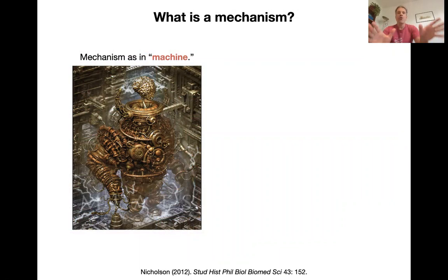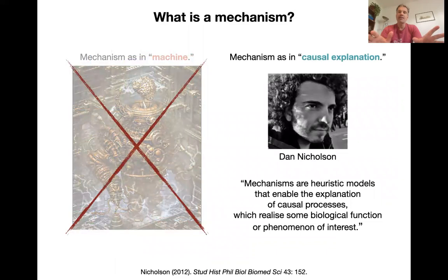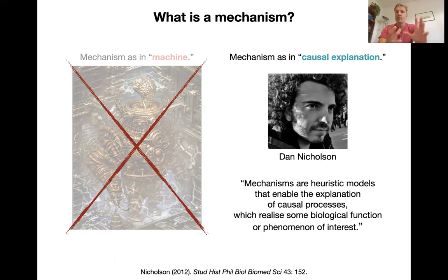This is a very important point. When I talk about mechanistic explanation, I'm not talking about considering organisms as machines or clockworks, and I'm not invoking computational metaphors. Also, I'm not saying a mechanistic explanation has to be grounded at the molecular level. I am treating mechanism as a causal explanation — mechanisms as heuristic models that enable the explanation of causal processes which realize some biological function or phenomenon of interest. These mechanistic explanations can be multileveled and don't have to interpret development as a genetic program.